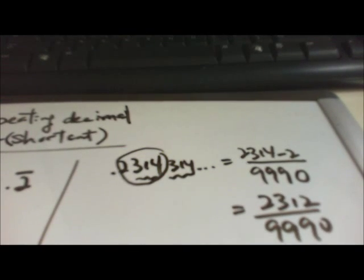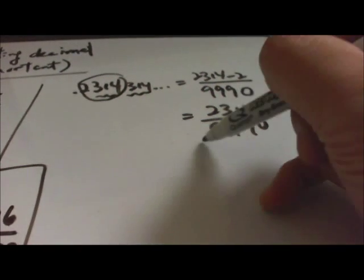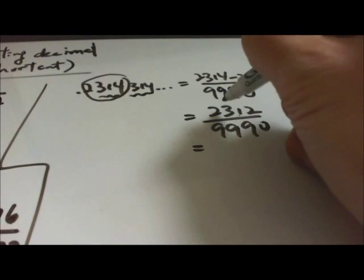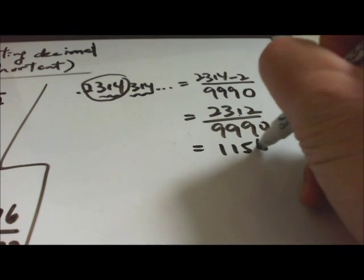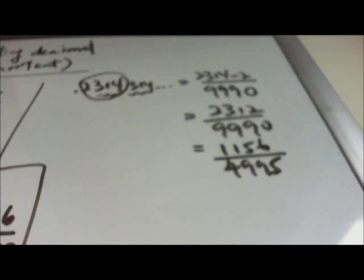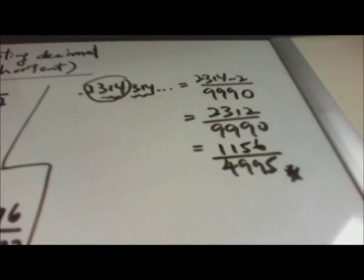Now we simplify. This number is not divisible by 9, but it's divisible by 2. Divide by 2 and you get 1156 over 4995. This is the final answer in fraction form. Let's try another one.